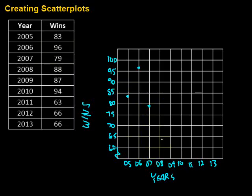Then we go 2008, 88 wins, put us right there. 2009, we have 87, drop down just one, tiny bit less than half there. Then we go 2010 at 94, puts us right here. 2011, 63, ooh, big drop there, down to here. And then we go 2012, 66, and 2013, back at 66.